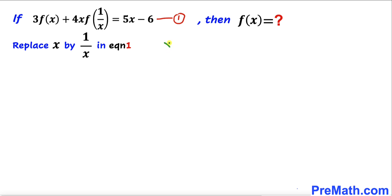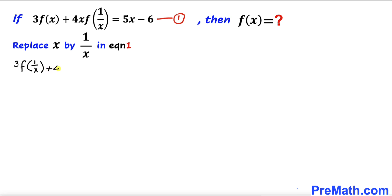In other words, I am going to replace x by 1 over x — just flip it over. Likewise, wherever we see 1 over x, we flip it over and it simply becomes x. Therefore equation 1 becomes: 3 times f of 1 over x, plus 4 times 1 over x times f of x, equals 5 times 1 over x minus 6.